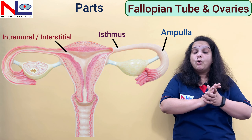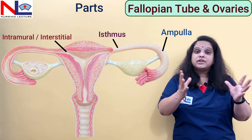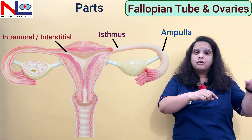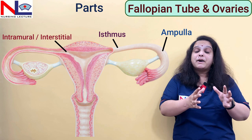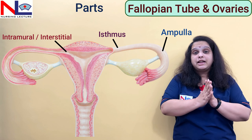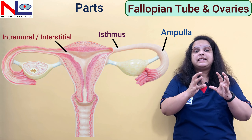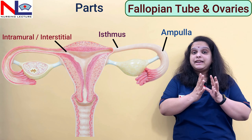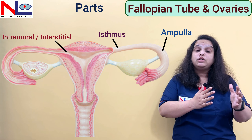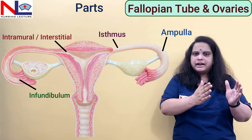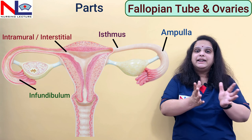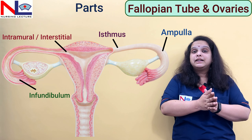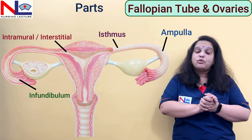The third part is more wide, more large, and more tortuous — it has more bends. This part, which is responsible for the site of fertilization, is the ampulla. So the third part which is most wide is the ampulla. The fourth part is the infundibulum, which is also wide with a diameter of about 6 mm toward the abdominal opening.